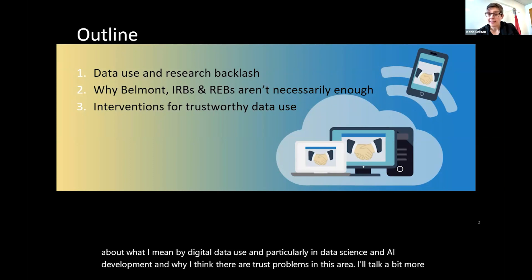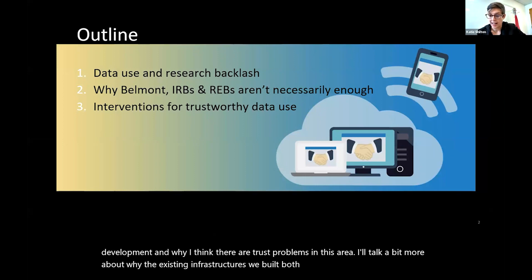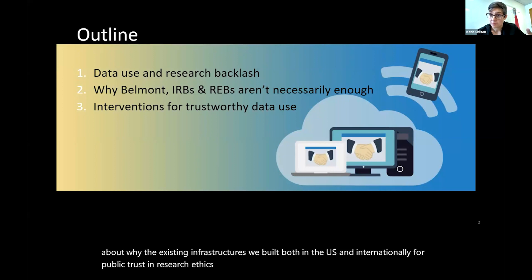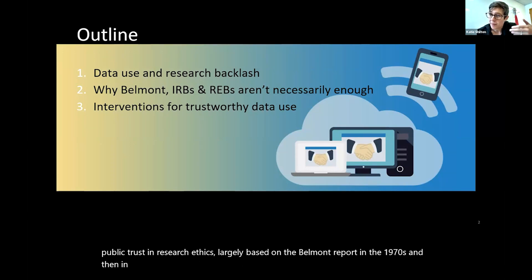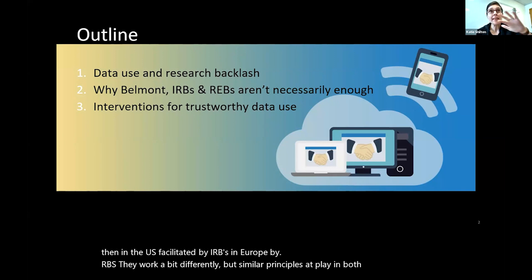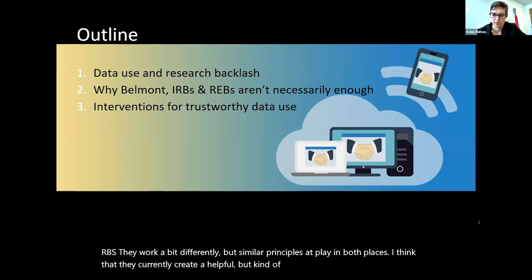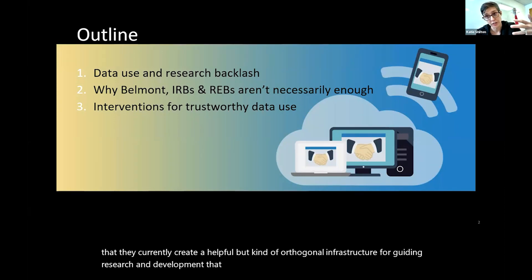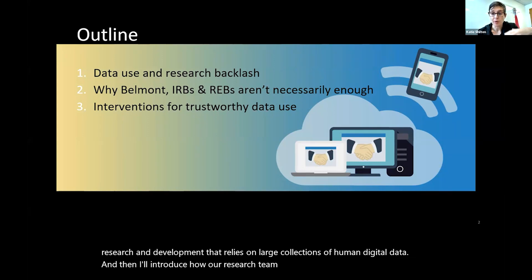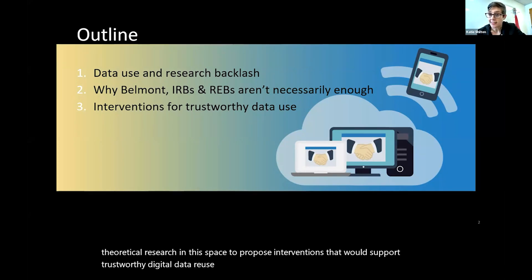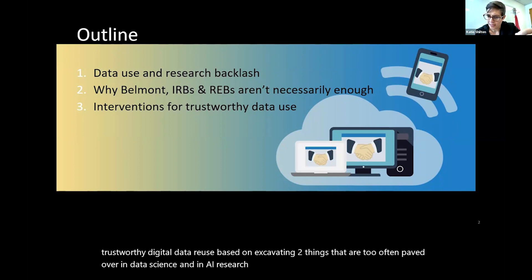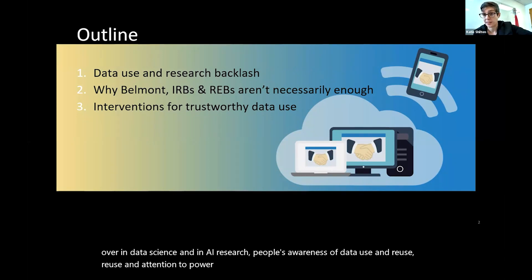I'll talk about why the existing infrastructures we've built, both in the U.S. and internationally, for public trust in research ethics — largely based on the Belmont Report in the 1970s, and in the U.S. facilitated by IRBs, in Europe by REBs — currently create a helpful but kind of orthogonal infrastructure for guiding research and development that relies on large collections of human digital data. Then I'll introduce how our research team used empirical and theoretical research to propose interventions supporting trustworthy digital data reuse, by excavating two things too often paved over: people's awareness of data use and reuse, and attention to power relationships.